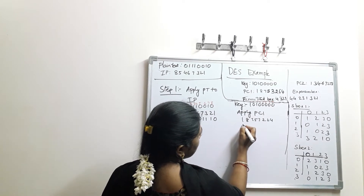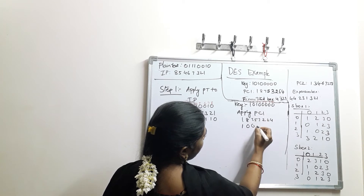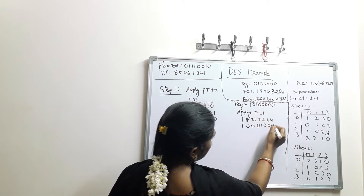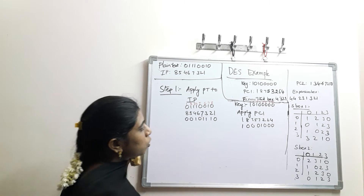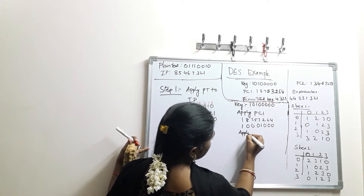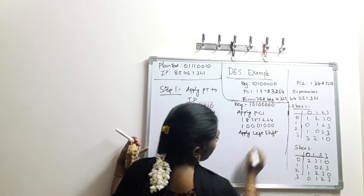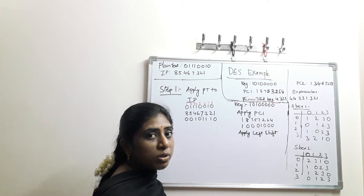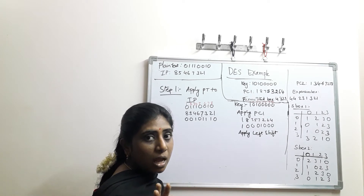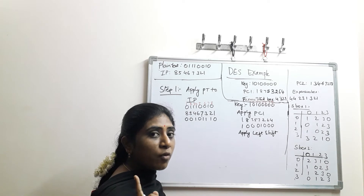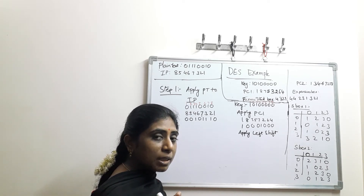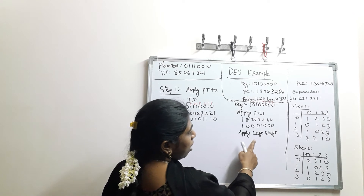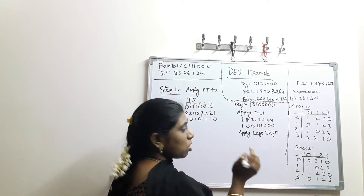Applying PC-1: the 1st bit is 1, 8th bit is 0, 7th bit is 0, 5th bit is 0, 3rd bit is 1, 2nd bit is 0, 6th bit is 0, and 4th bit is also 0. Then apply the left shift. The left shift is determined by the round number — for rounds 1, 2, 9, and 16 it is a left shift of only 1 bit; all other rounds shift by 2 bits. Since we are in round 1, the left shift value is 1 bit.